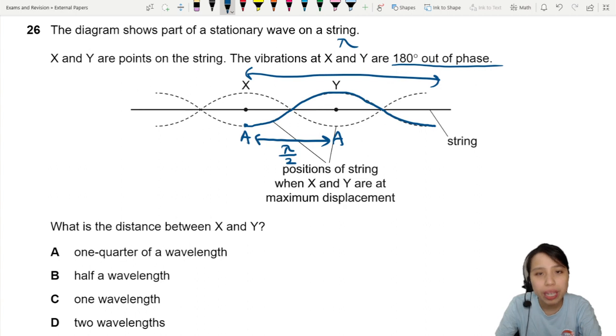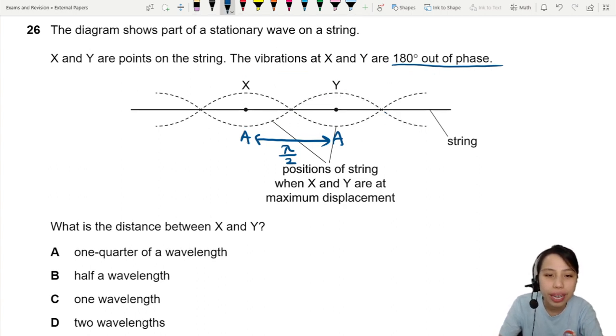So when you chop that in half, it becomes lambda over 2. So half of the cycle. So there we have this.